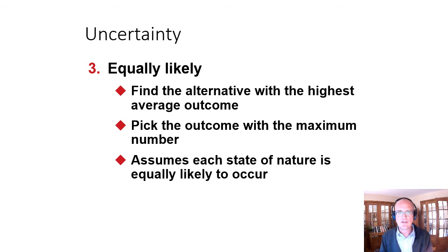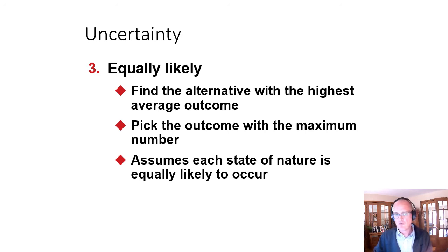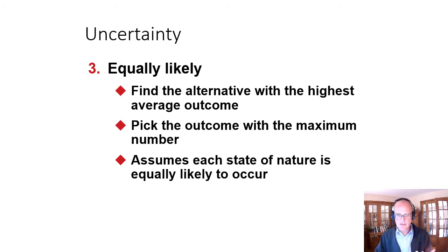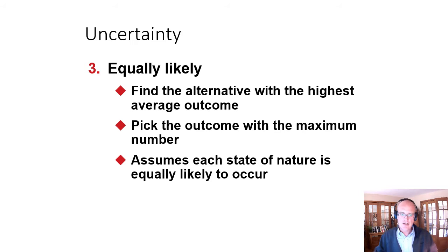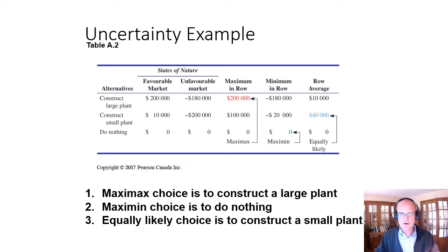Generally, we use expected monetary value. We can also, if we don't do probabilistic weighting, use 'equally likely' — finding the alternative with the highest average outcome. This assumes that every state of nature is equally likely to occur. You might use that if you don't have a sense of the probability, but in general we assign probabilities and weight the expected value by those probabilities.